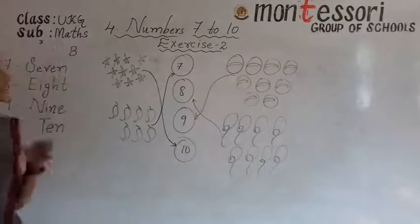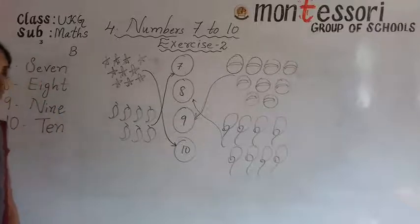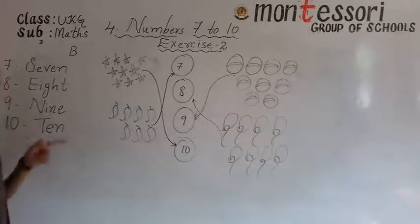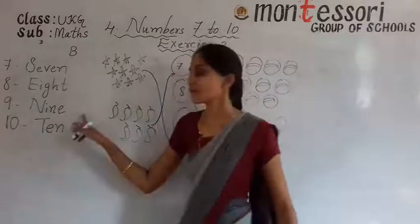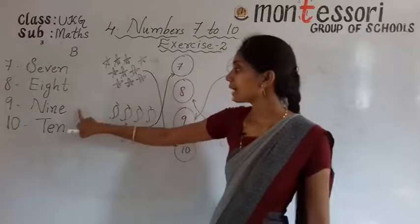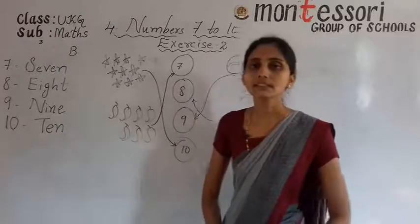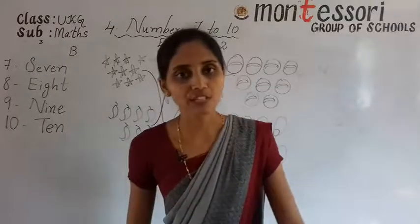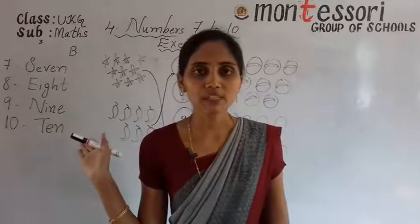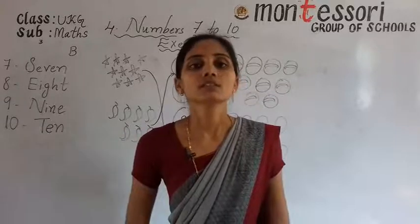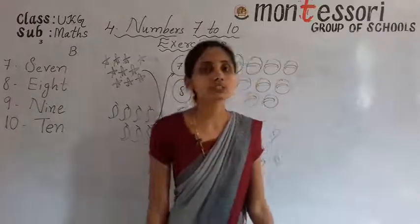Once again we will revise the spellings. Spelling of 7: S, E, V, E, N — seven. Spelling of 8: E, I, G, H, T — eight. Spelling of 9: N, I, N, E — nine. 10: T, E, N — ten. Complete page number 28 and study the spellings of 7 to 10. That's all for today. Thank you, dear children.